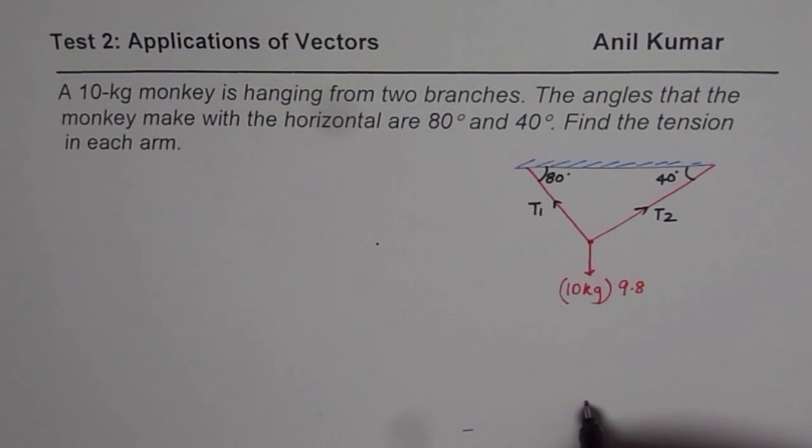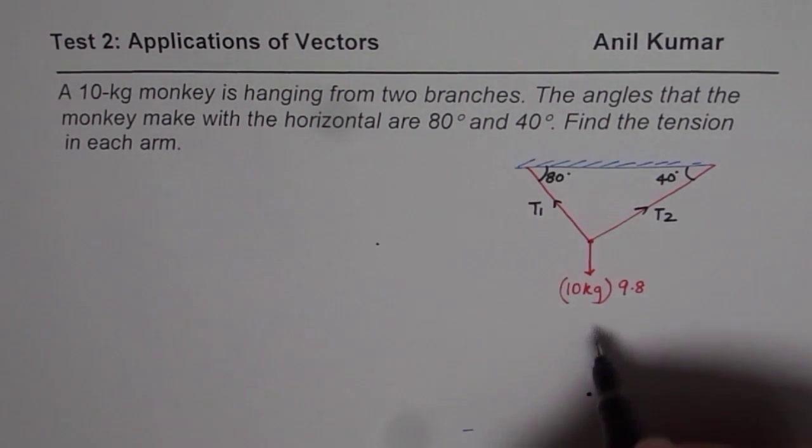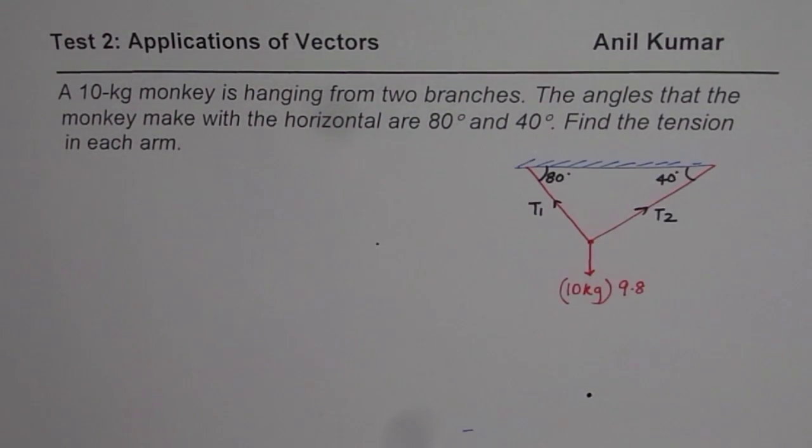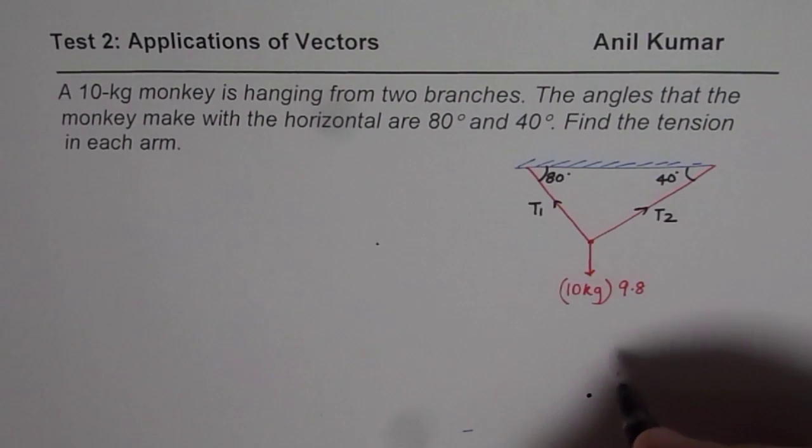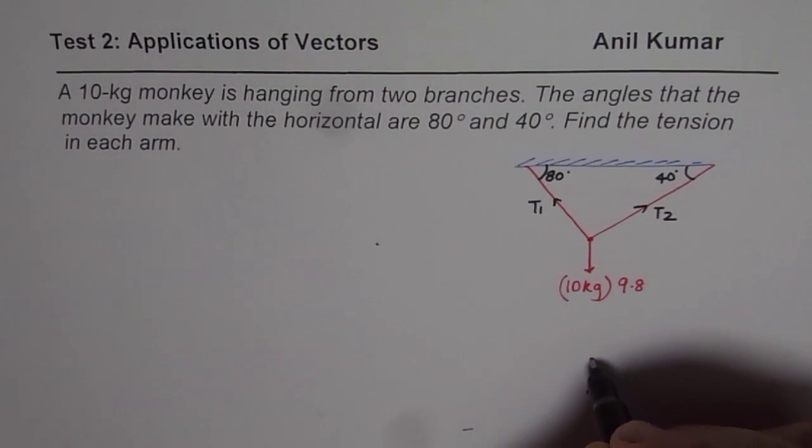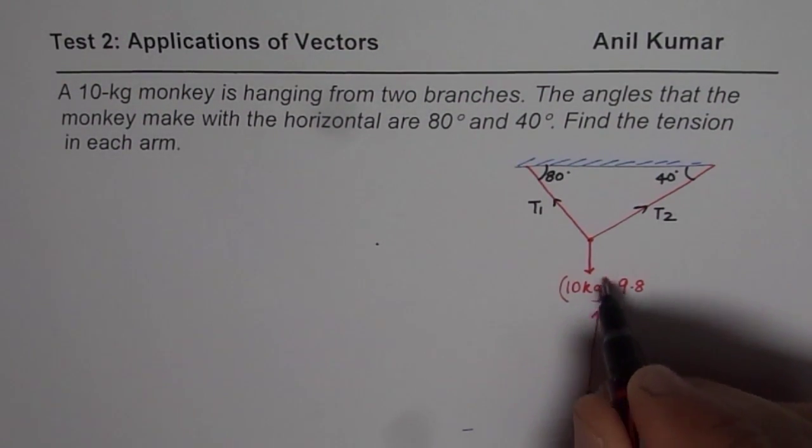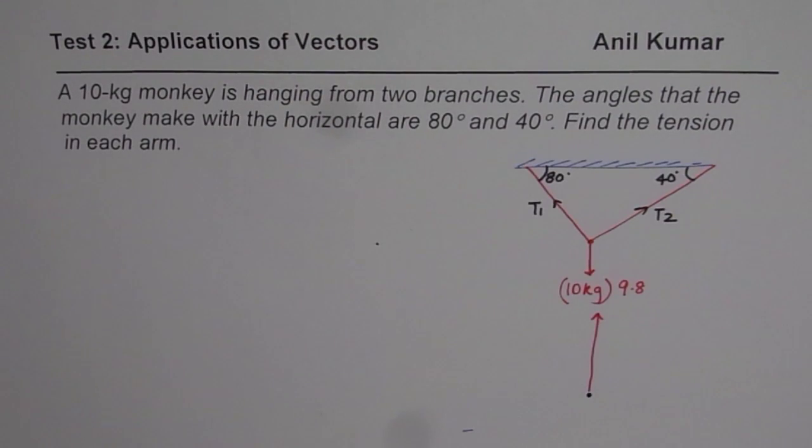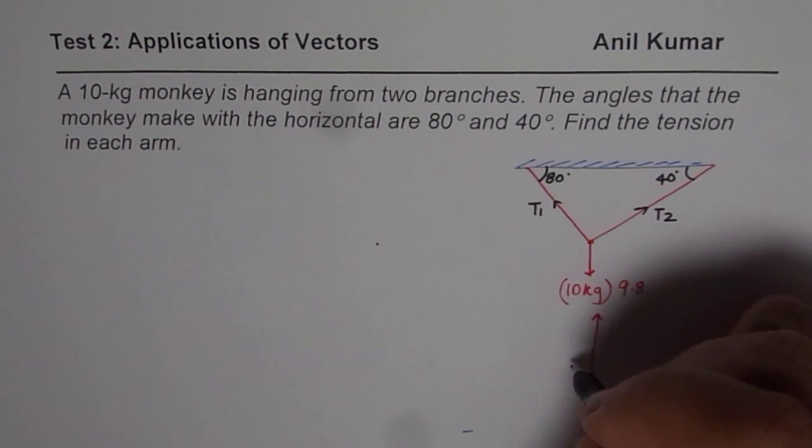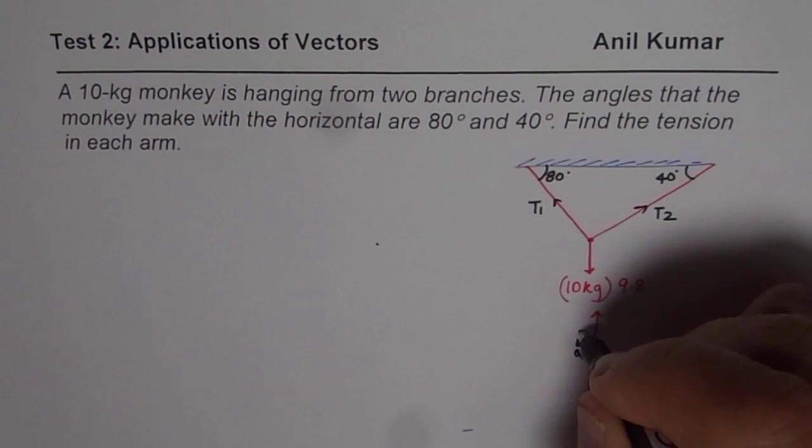Let me draw it here. So from here, equal and opposite force from this point which keeps these two things in place will be in this direction. And this force is 10 times 9.8, so let me write this as 98 Newton.